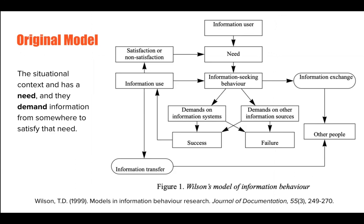This is the original model. At the top of the model, we have the information user, and the user has a particular information need. The need is what drives the user to perform information-seeking behavior by putting demands on information systems — like a library catalog — or other information sources, which is pretty much anything not specifically designed for information retrieval. We then have either the success of the demand, meaning the demand has been fulfilled, or the failure of the demand. If the demand is successful, then they now have information they can use, and if that information has satisfied their need, they can start the process again with a new need.